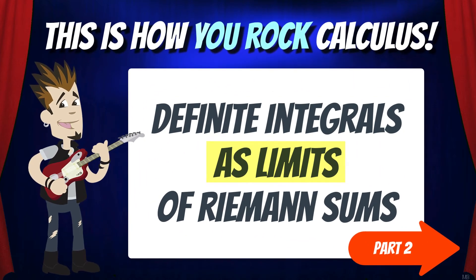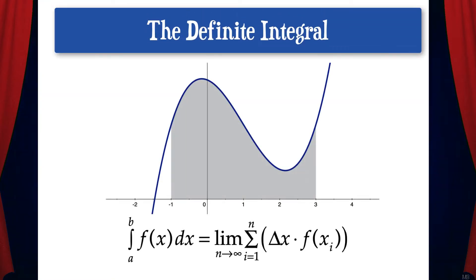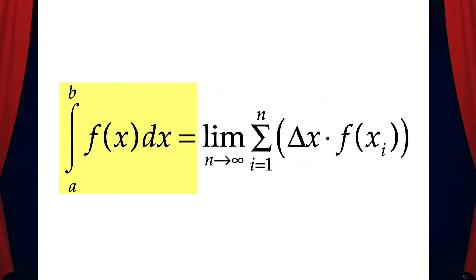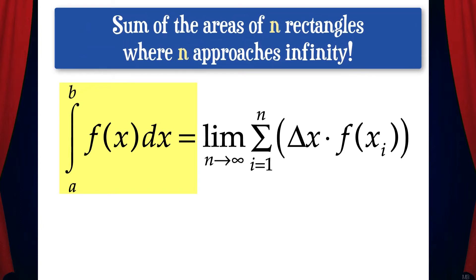Hey everybody, in this video we're going to continue talking about definite integrals as limits of Riemann sums. First, let's review the big idea. In the last video we talked about how definite integrals are the exact area under a curve and can be expressed as limits. So the integral from a to b of f dx equals the limit as n goes to infinity of the sum of delta x times f sub i where i goes from 1 to n. This means we're finding the sum of the areas of n rectangles where n approaches infinity.